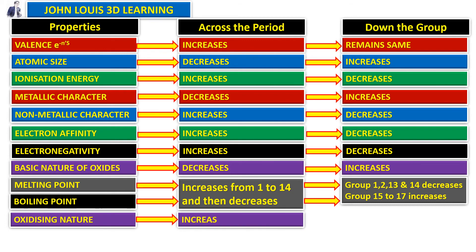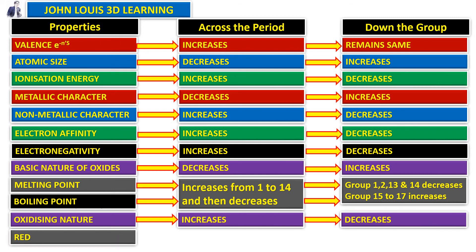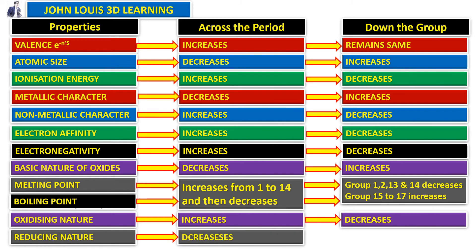Oxidizing nature increases when we move from left to right across the period, and decreases when we move down the group. Reducing nature is just the opposite — it decreases across the period and increases down the group.